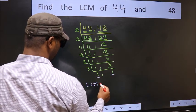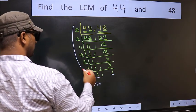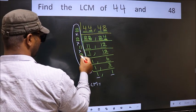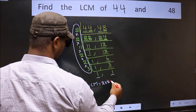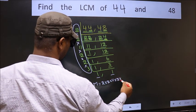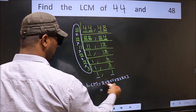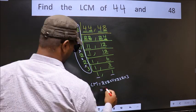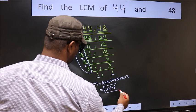So our LCM is, LCM is the product of these numbers. That is 2 into 2 into 2 into 11 into 2 into 2 into 3. When we multiply these numbers we get 1056 is our LCM.